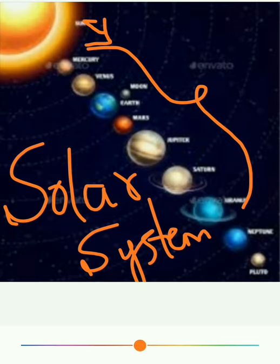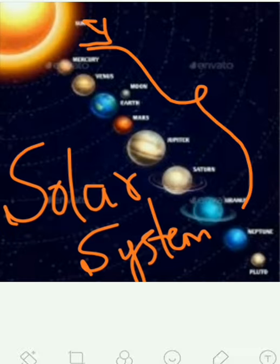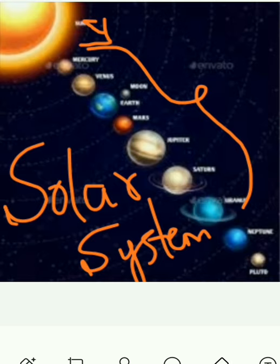First one is Mercury — the distance between sun and Mercury is less. Second one is Venus. Venus and earth distance is less compared to the distance between earth and sun. On the basis of distance between planets and sun, we consider there are 8 planets.